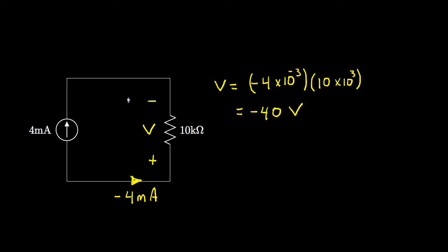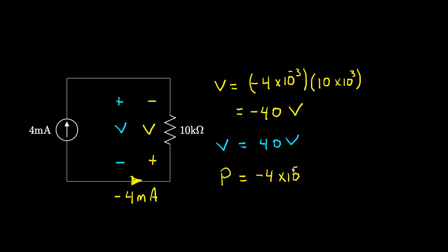Had we defined the voltage with the opposite polarity — negative on the bottom and positive on the top — we would have found 40 volts. Either way is consistent: −40 volts from top to bottom is the same as +40 volts from bottom to top. For the power, with the current entering the positive terminal: P equals (−4×10⁻³) times (−40), which equals 160×10⁻³ watts, or 160 milliwatts.